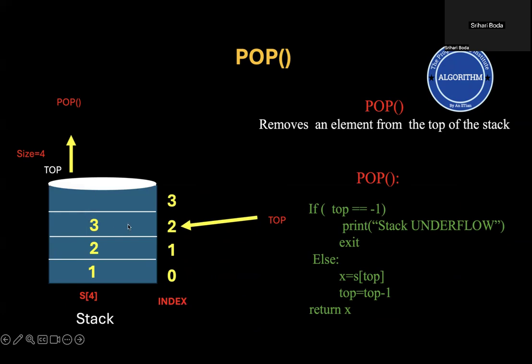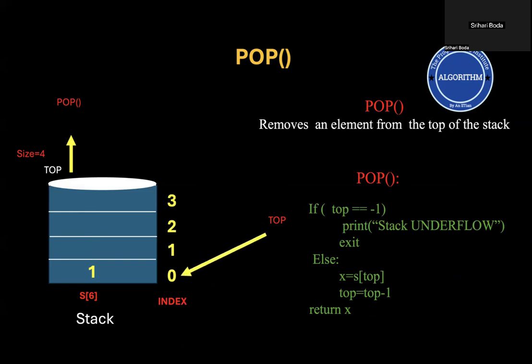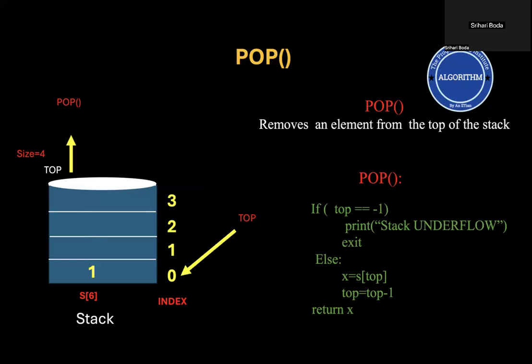Again, if you want to remove one more element, remove 3 and decrement top by 1. Then remove element 2 and decrement top by 1, so top points to 0. Now we have only one element in the stack. If you want to remove that element, mark element 1 to be removed, decrement top by 1 — so 0 minus 1 — and top should go and point to minus 1.